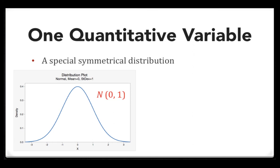This notation is often used. The N tells us that the shape of the distribution is normal. The first number in the parentheses is the mean, and the second number is the standard deviation. So this is a normal distribution with a mean of 0 and a standard deviation of 1.